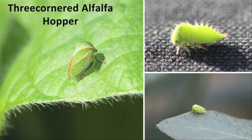The first insect we're going to discuss is the three-cornered alfalfa hopper. As you can see pictured here, this is a wedge-shaped insect. The adult is typically green in color and not very large — no more than a quarter inch in length. Behaviorally, it's kind of easy to notice because, as the name implies, it does hop or pop around in the net, which is very obvious.